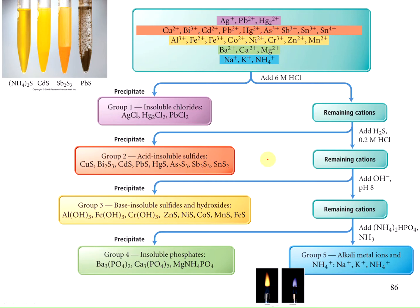After removing group 1 and group 2, I can remove the group 3 ions—aluminum through manganese—by increasing the pH of the solution. When I increase the pH, the hydrogen sulfide is still present, which increases the sulfide concentration, causing the group 3 ions to precipitate out. Some will precipitate as sulfides and some as hydroxides. You've still got group 4 and group 5 ions in solution. After removing group 3, another group separation test precipitates group 4, leaving group 5 ions in solution. Group 5 ions can be identified by using a flame test.